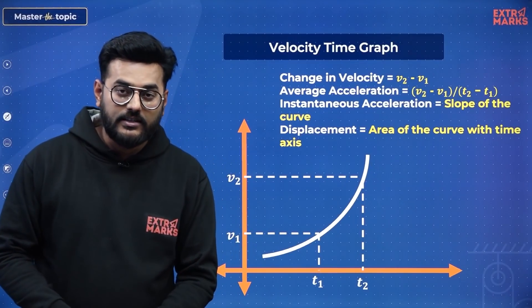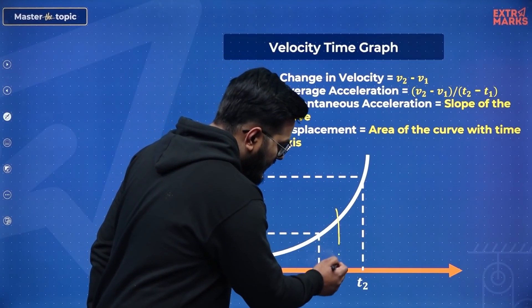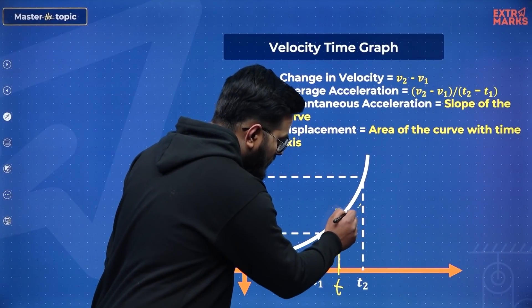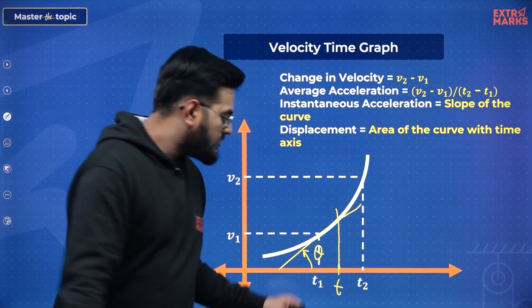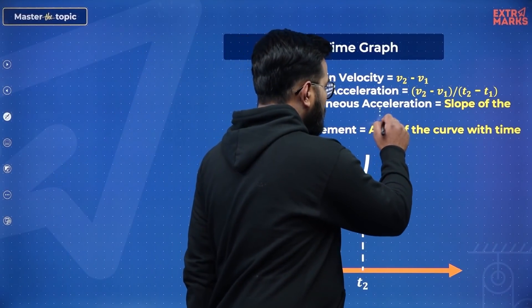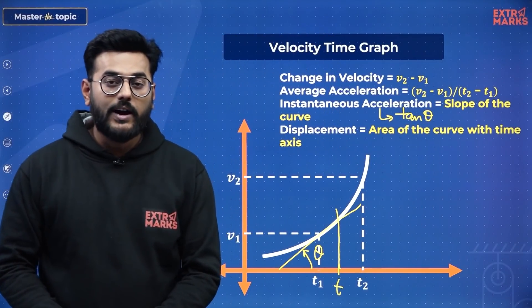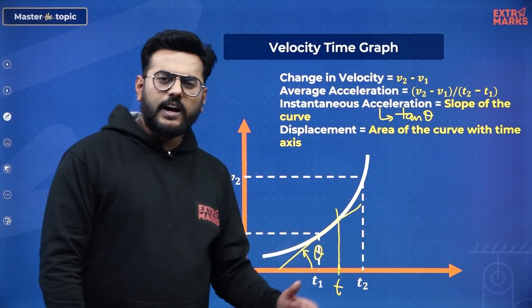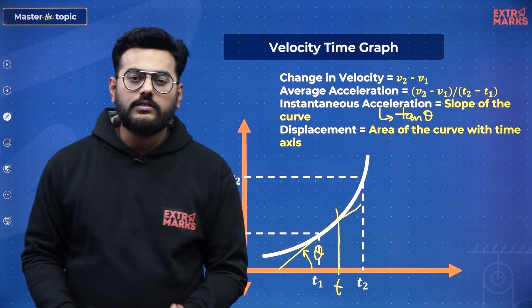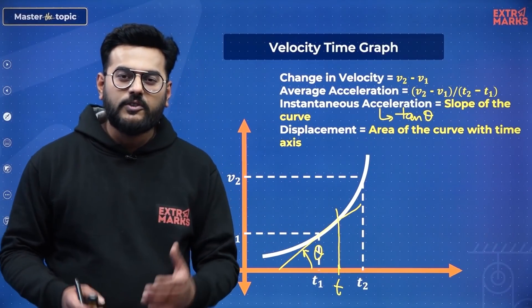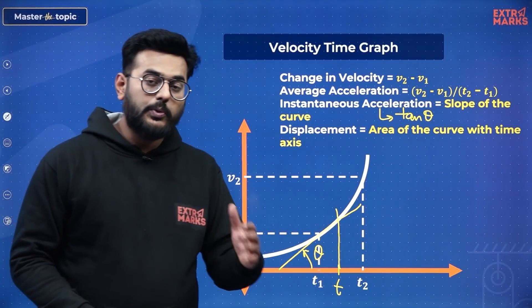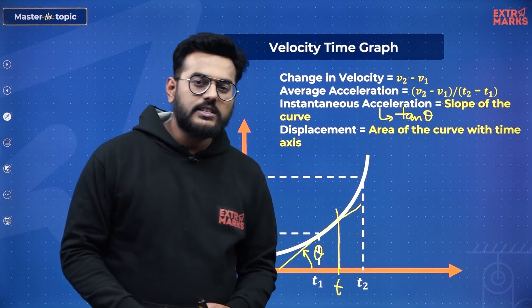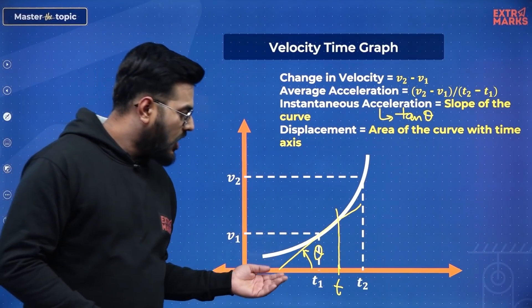You can also find instantaneous acceleration the same way — draw a tangent at that general time T, and the tan of the angle with the positive x-axis gives the instantaneous acceleration at that point. Also, importantly, you can find displacement from a VT graph. I'll be using this when converting an AT curve into a VT and then an XT curve. I just need to focus on the area the curve makes with the time axis.